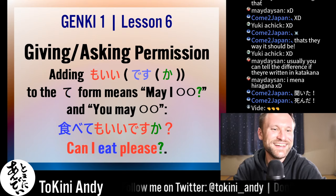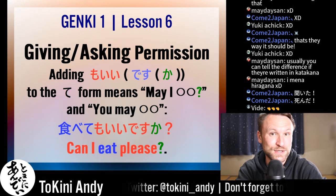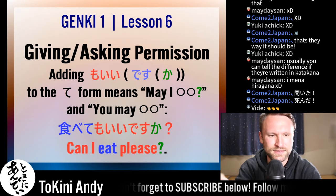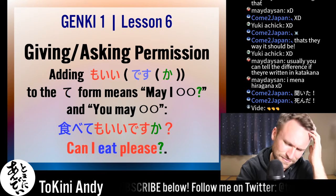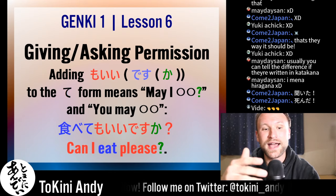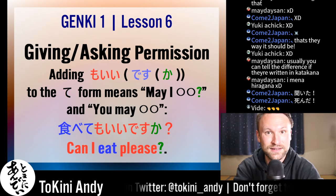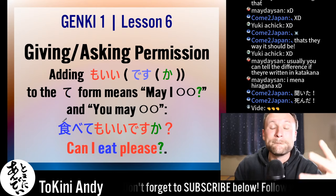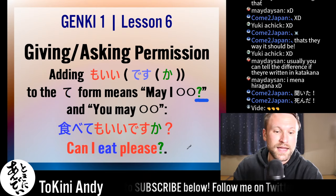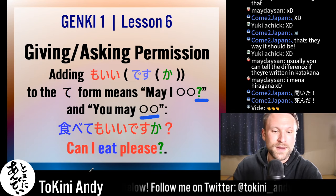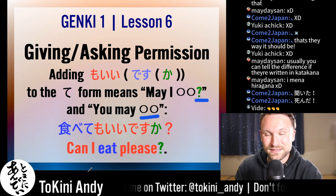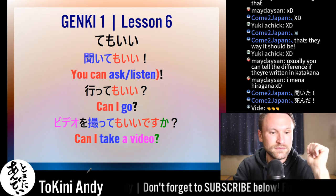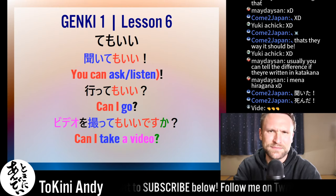Our next form is giving and asking permission to do something. That's done by adding 'mo ii' to the te form. 'Te mo ii desu' is the full form, but I rarely add 'desu' — it's usually fine alone. If you're asking for permission: 'something shite mo ii desu ka?' — may I do something? If giving permission: just end in 'mo ii.' My example: 'tabete mo ii desu ka?' — can I eat, please?